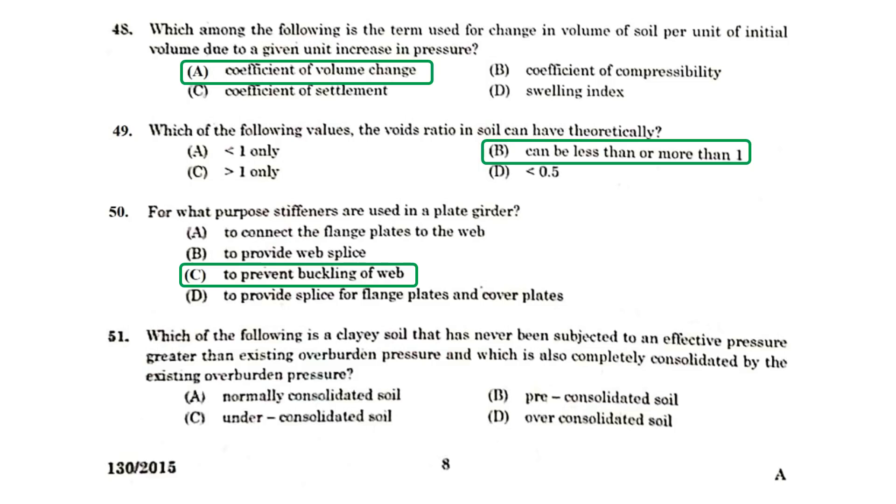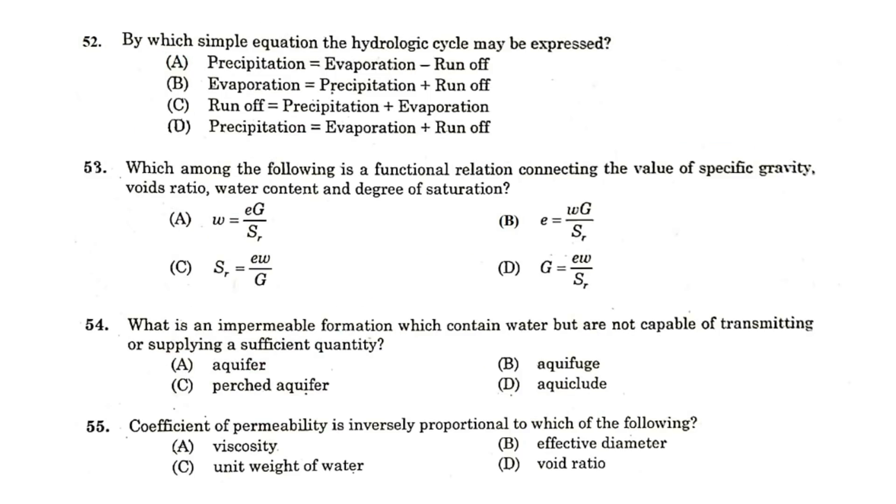Which of the following is a clay soil that has never been subjected to any effective pressure greater than existing overburden pressure and which is also completely consolidated by the existing overburden pressure? Normally consolidated soil. By which simple equation the hydrologic cycle may be expressed? Precipitation is equal to evaporation plus runoff.